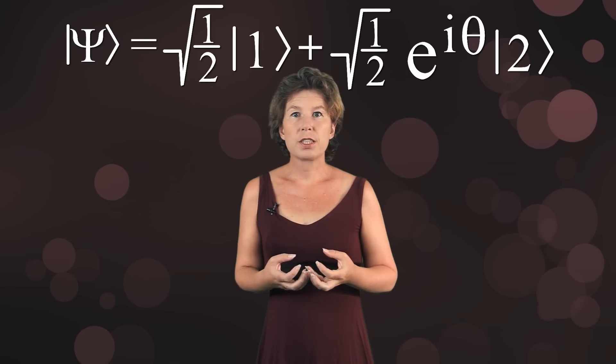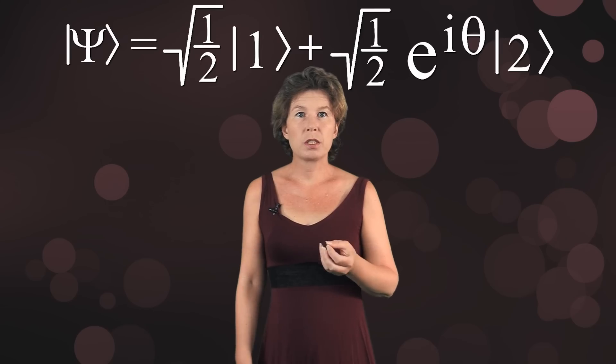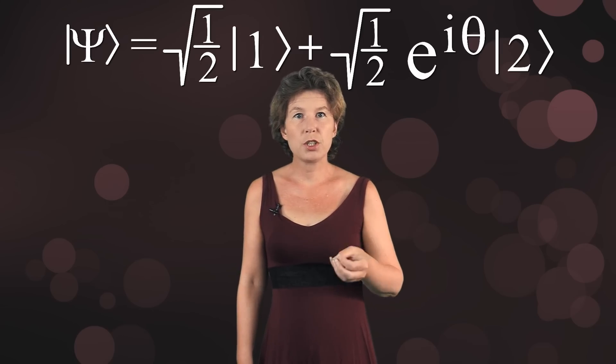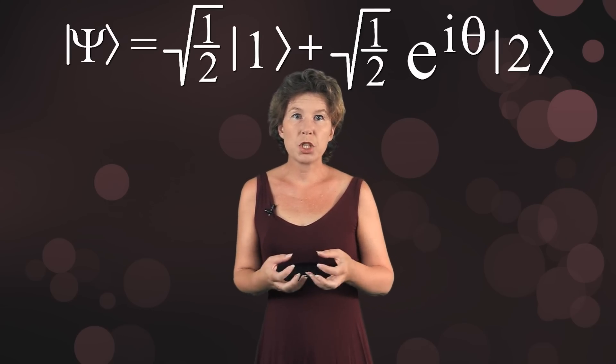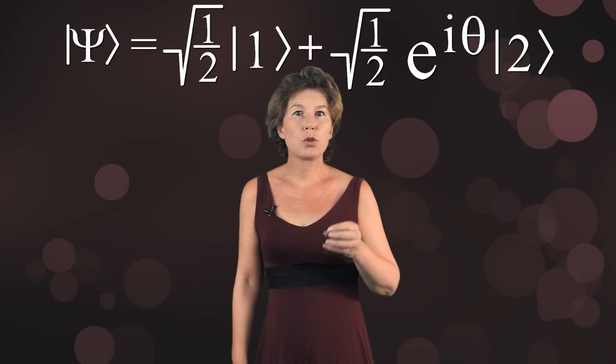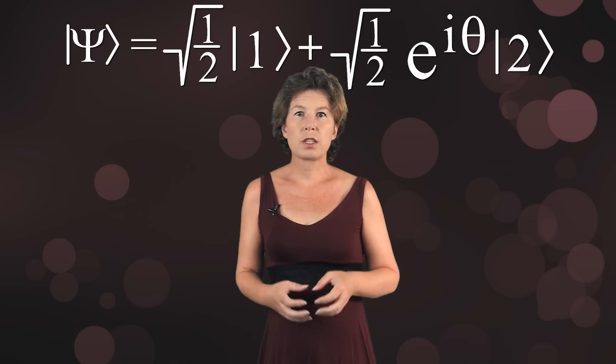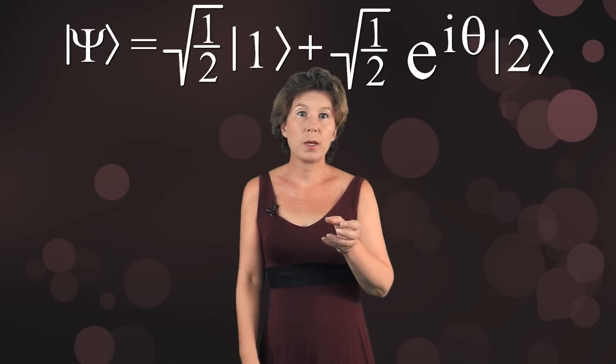The idea of decoherence is then to say that each time the particle bumps into some other particle, this phase randomly changes, and what you actually measure is the average over all those random changes. So understanding decoherence comes down to averaging this complex number.